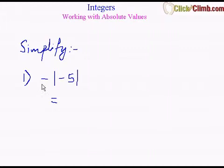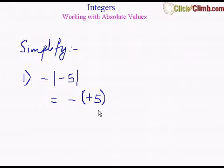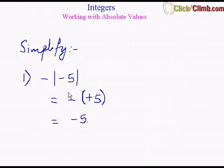The first thing I do is I don't solve the outer negative sign — I just put that as negative. Now I simplify the absolute value of negative 5. The absolute value of negative 5 is 5, or positive 5. The negative and positive make a negative, so the negative of absolute value of negative 5 is negative 5.